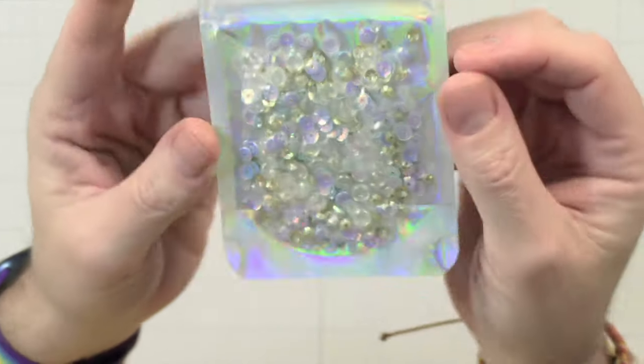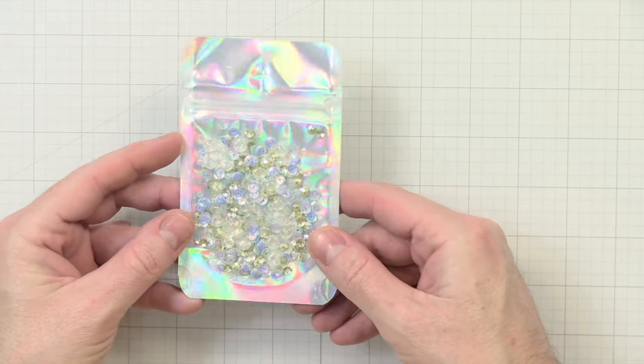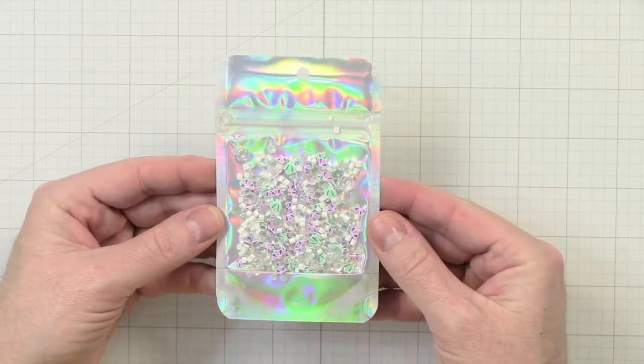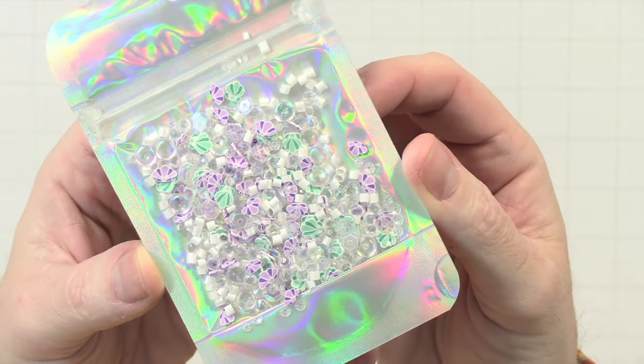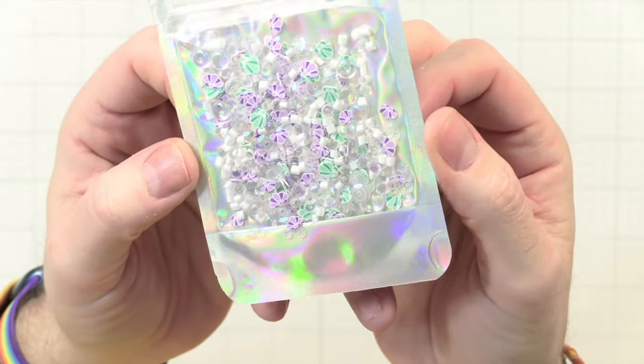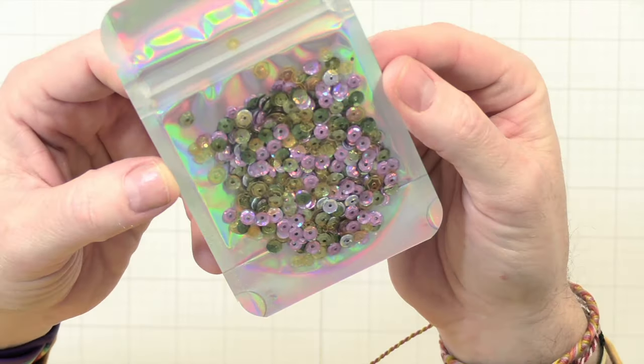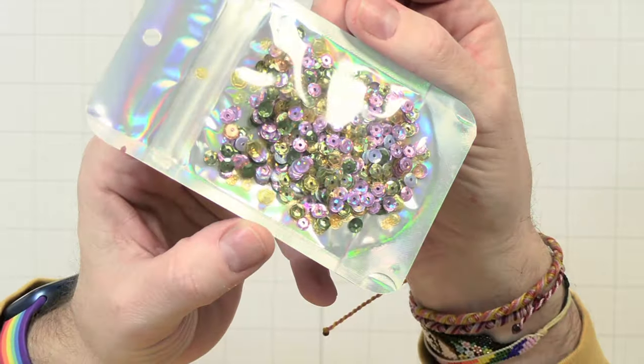And then we have Seashells, which has a bunch of seashells in them. Check that out. Got some clear, some round stuff in there. Really pretty purple and green shells. And then last but not least we have Colors of Flowers, and some purples and yellows and greens. Kind of reminds me of a muted Mardi Gras kind of color situation.